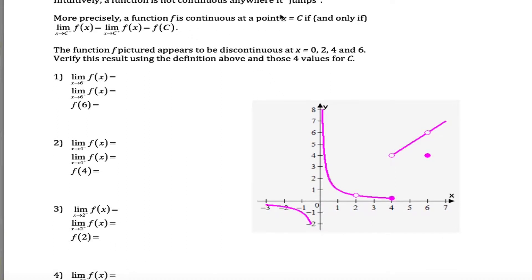All it says is that a function is continuous at any point c if, and only if, the limit when you get really close to c from the left is the exact same as the limit when you get really close to c from the right, which is the exact same as the height of your function at the point c. That kind of makes sense once you understand what these things mean, but a little example helps to see how this mathematical statement implies continuity.